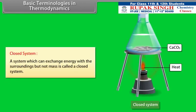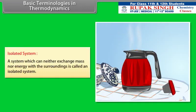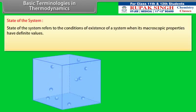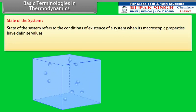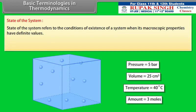A system which can exchange energy with the surroundings but not mass is called a closed system. A system which can neither exchange mass nor energy with the surroundings is called an isolated system. The state of the system refers to the conditions of existence of a system when its macroscopic properties have definite values. For example, the state of a gaseous system can be defined by its pressure, volume, temperature, and amount.